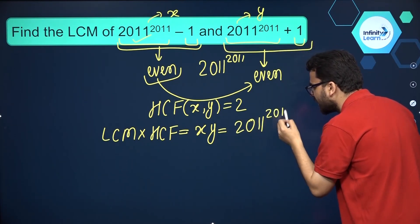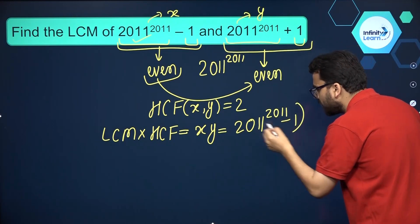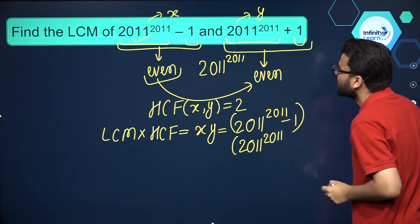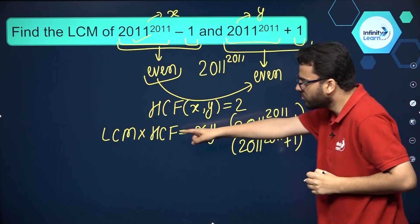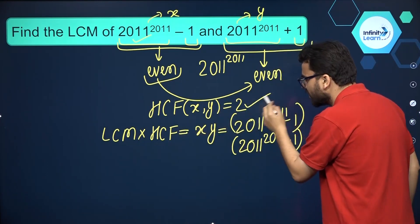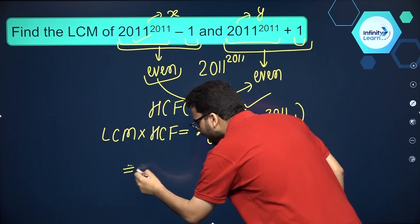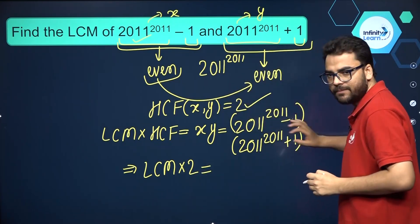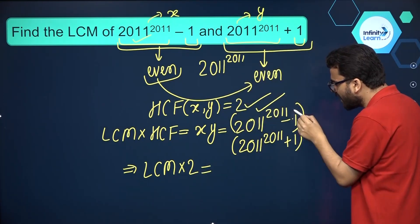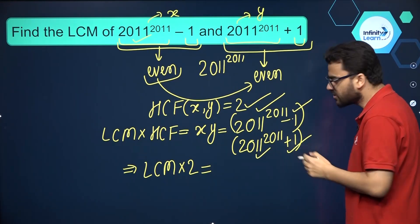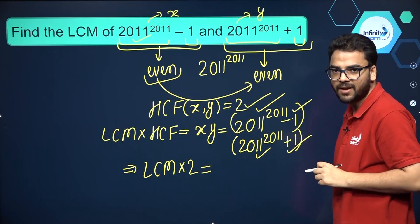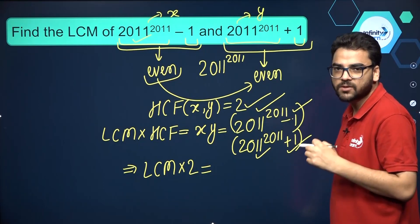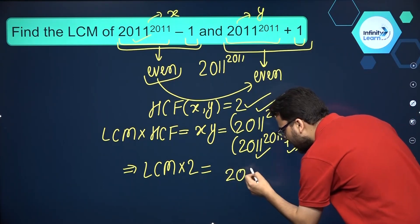The product of these two numbers will be (2011^2011 minus 1) multiplied by (2011^2011 plus 1). We already know the HCF of these numbers is two. So LCM times 2 equals this product. You see these numbers are of the form (a minus b) and (a plus b), where a is 2011^2011 and b is one. So we can use the identity (a+b)(a-b) = a² - b², giving us (2011^2011)² minus 1².